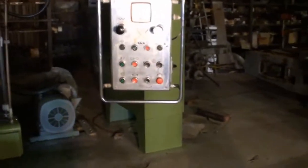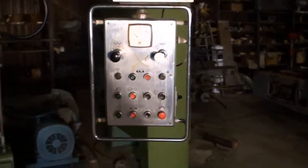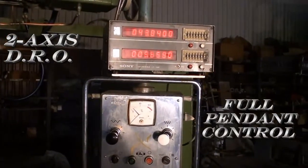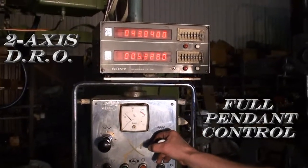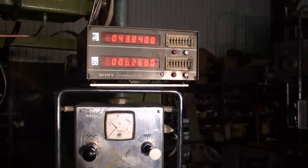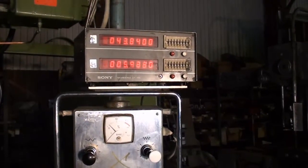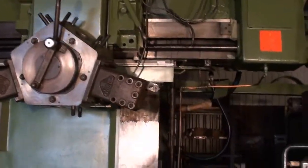I want to show the full pendant control here and we're also feeding to show one axis of the Sony readouts working. Now we'll go ahead and change the feed direction. Here we've kicked the feed rate up a bit to 125.